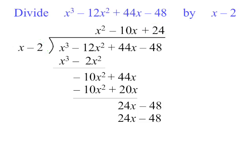Now as soon as you've written something underneath, you need to subtract them. 24x subtract 24x is 0. Negative 48 subtract negative 48 is also 0.